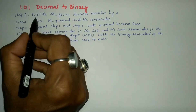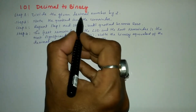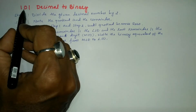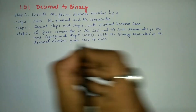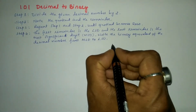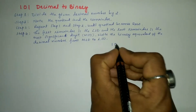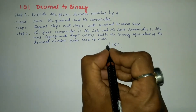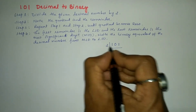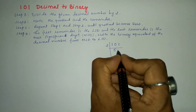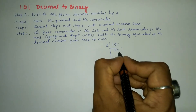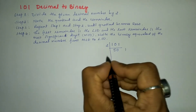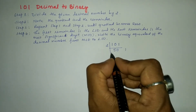Let us follow the first step. We are going to divide the given decimal number by 2. Here I am going to write 101 and divide this number by 2. 2 fives are 10, that is 2 times 50 is 100, so 1 will become the remainder.